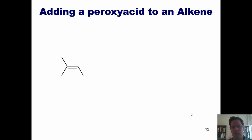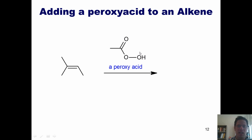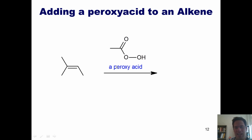The next reaction I want to teach you is adding a peroxy acid to an alkene. This is pretty simple and straightforward. If you have an alkene like the one I've shown here and you add this type of molecule — rather than having a methyl here, you could have various different types of carbon-hydrogen chains — this type of molecule is called a peroxy acid.